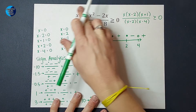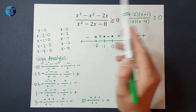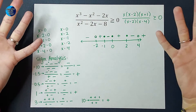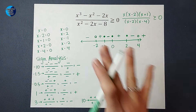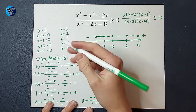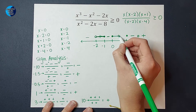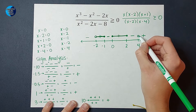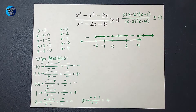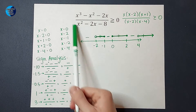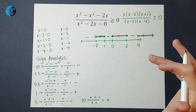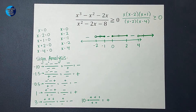Now we're going to look back at our inequality. We wanted to know where this was greater than or equal to 0. What types of numbers are greater than 0? Positive numbers. So we already figured out what regions are positive. It's from negative 2 to negative 1 — we include negative 1 because that's where it would be 0. From 0 to 2, including both 0 and 2. And numbers greater than 4. Pick a number that fits in any of these regions and it will make this statement true.